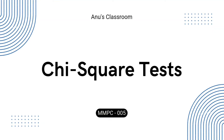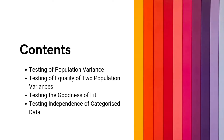Hi everyone, welcome to Anu's Classroom. In this video we are trying to wrap our heads around the basic concepts of the chi-squared tests. A few of the things we will be discussing are: the testing of population variance, testing of equality of two population variances, how we test for the goodness of fit, and testing the independence of categorized data.